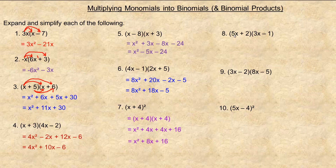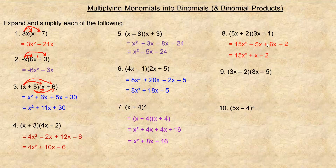For question eight: 5x times 3x is 15x squared — remember, add the exponents, one plus one gives two. 5x times negative one is minus 5x, then two times 3x is plus 6x, and two times negative one is minus two. Combining like terms: negative 5x plus 6x is positive 1x. So the answer is 15x squared plus x minus two.